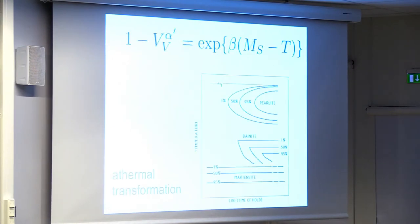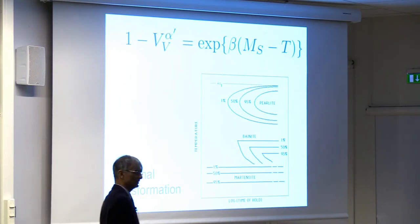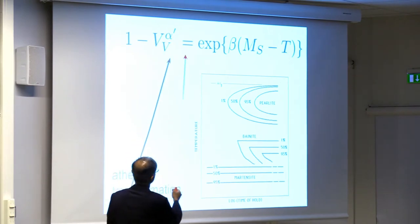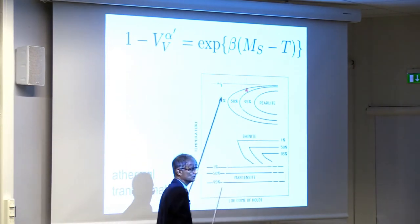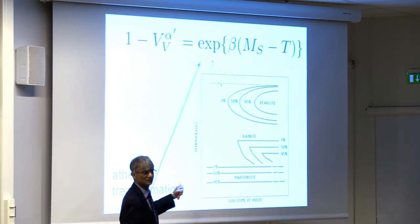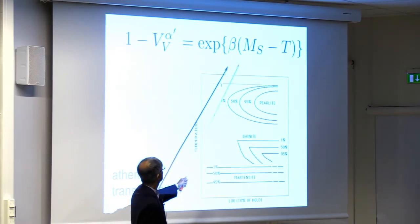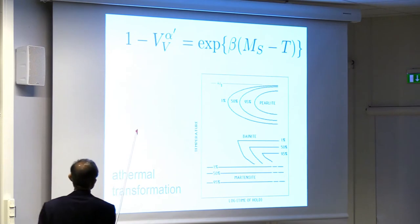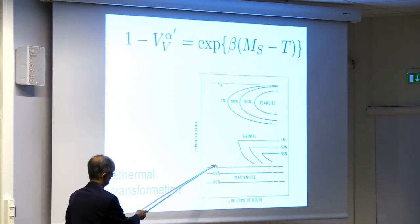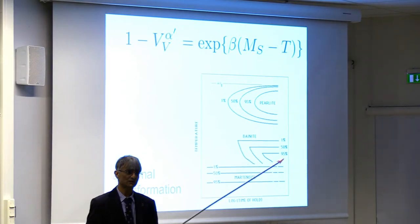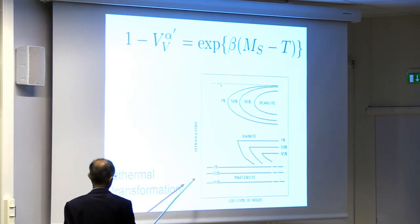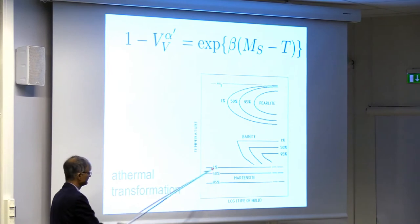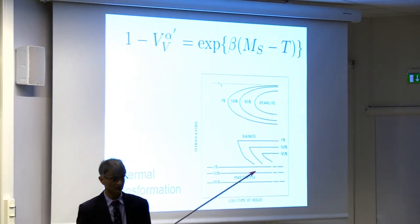We call martensitic transformations athermal. Here is an equation describing how the volume fraction of martensite varies as a function of undercooling below the martensite start temperature — there is no time term in this equation (Koistinen-Marburger, beta ≈ −0.011). So you can calculate how the amount of martensite increases with undercooling: if I cool to a certain temperature I will get 50% martensite, no more. That's why we call this an athermal transformation. But it's not strictly athermal — our equipment simply cannot measure the rate at which martensite forms.